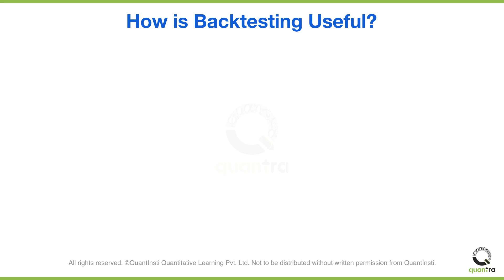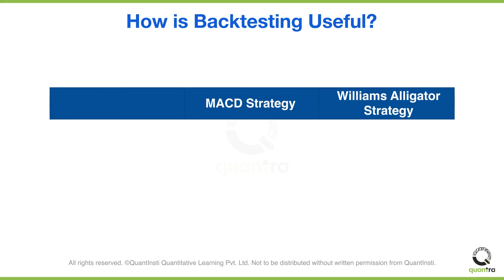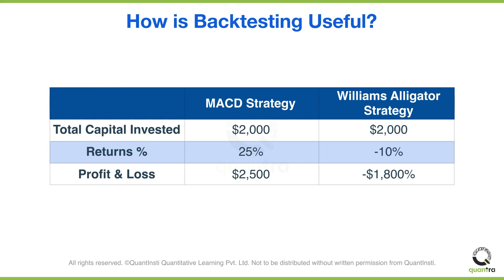Let's look at an example. Suppose there are two strategies on Tesla — the MACD strategy and the Williams Alligator strategy. Which strategy will you select? It is impossible to determine by just names. You can select by instincts or past experiences. However, the best way to select the strategy is by backtesting. It makes the picture more clear.